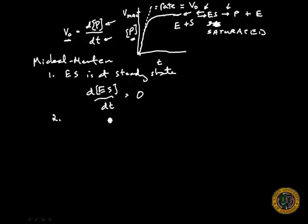Another assumption is that the breakdown of the ES complex is greater than making product. We measure this breakdown by K minus 1. K is the rate constant, and K2 is the rate of formation of product. As long as K-1 is much greater than K2, we can assume an equilibrium between the formation of ES and the breakdown of ES.